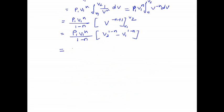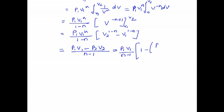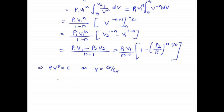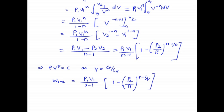Simplifying this equation gives W12 = (P1V1 − P2V2) / (N − 1). We can also write this as W12 = (P1V1 / (N−1)) · [1 − (P2/P1)^((N−1)/N)]. This is the work done for the process when PV^N = C. If N equals γ (= Cp/Cv), the work done becomes W12 = (P1V1 / (γ−1)) · [1 − (P2/P1)^((γ−1)/γ)], which is the work done for the process when PV^γ = C.